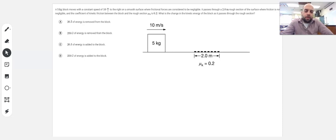A 5 kilogram block moves with constant speed of 10 meters per second to the right on a smooth surface where frictional forces are considered negligible. It passes through a 2 meter rough section where friction is not negligible, and the coefficient of kinetic friction between the block and the rough section, μk, is 0.2.